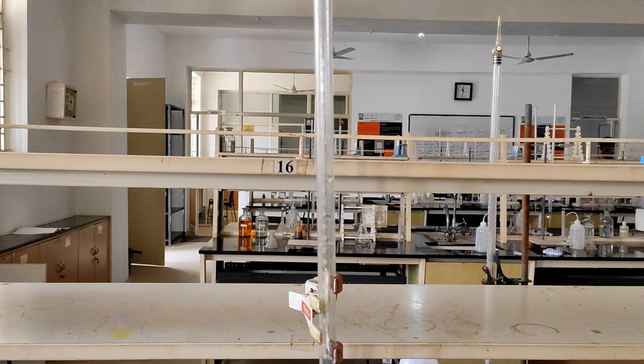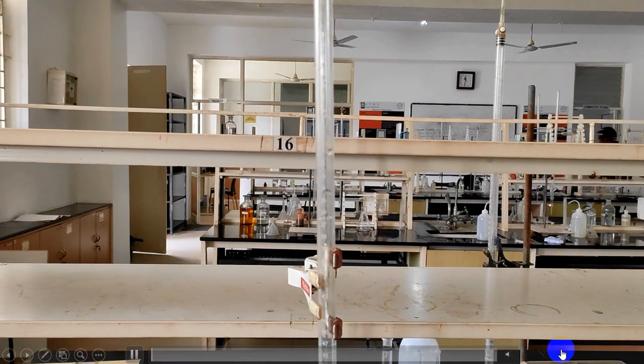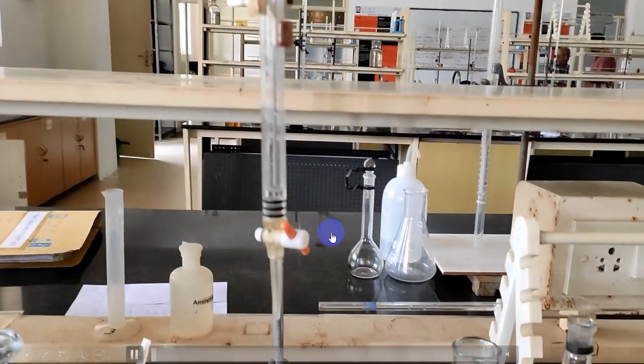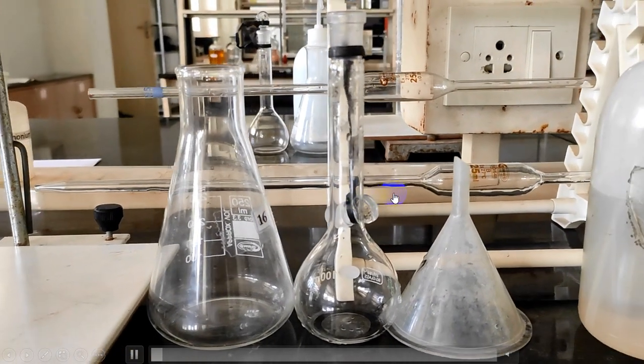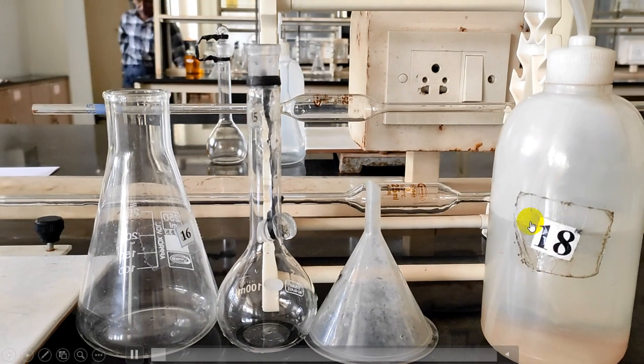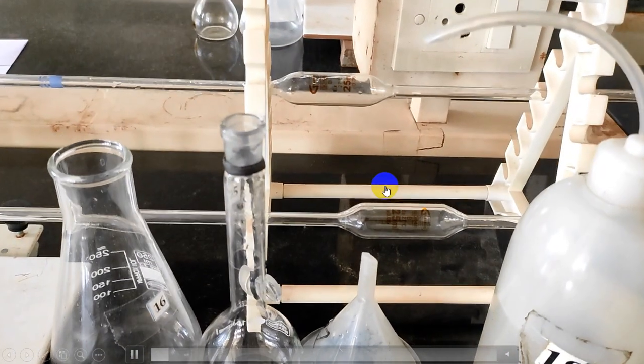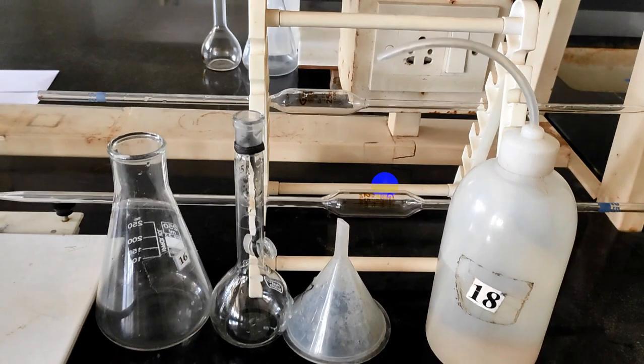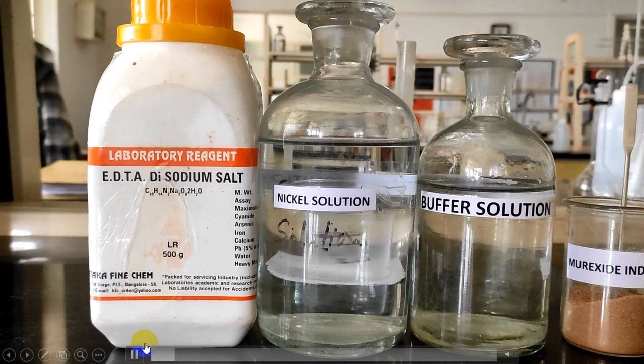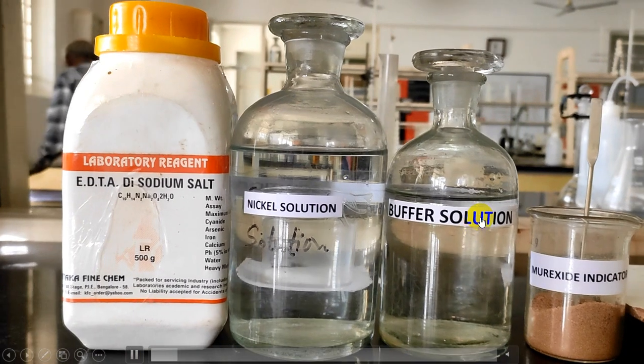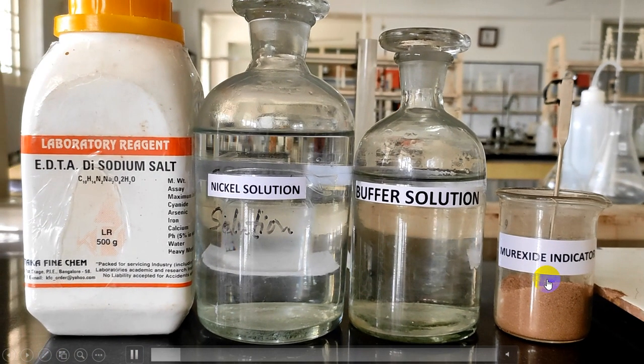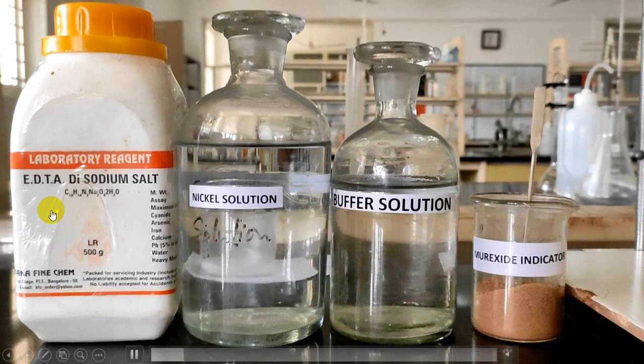Let us see the experimental demonstration. We need a burette, conical flask, standard flask, funnel, wash bottle, and pipette. We use 25 ml pipette. These are the chemicals required. We need disodium salt of EDTA, nickel solution, buffer and muroxide indicator.